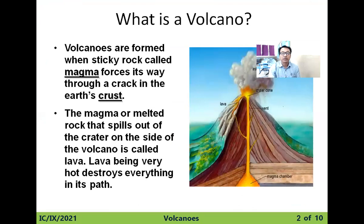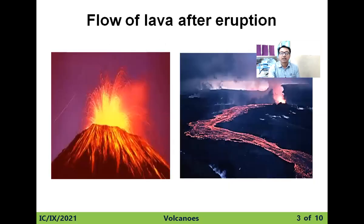Volcanoes are formed when sticky rocks called magma force their way through cracks in the Earth's crust. The magma, or the molten rocks that spill out of the crater on the side of the volcano, is called lava. Lava, being very hot, destroys everything in its path. The flow of lava after eruptions can be observed from these two pictures.